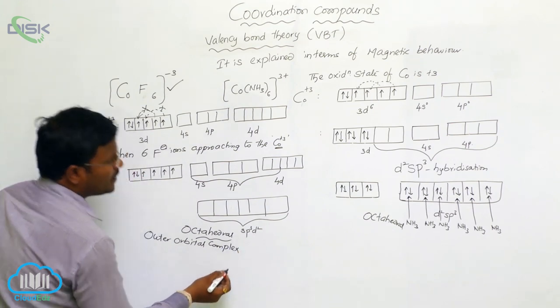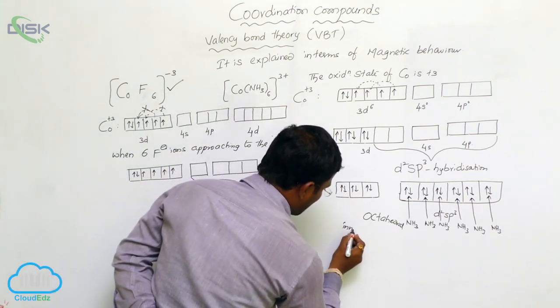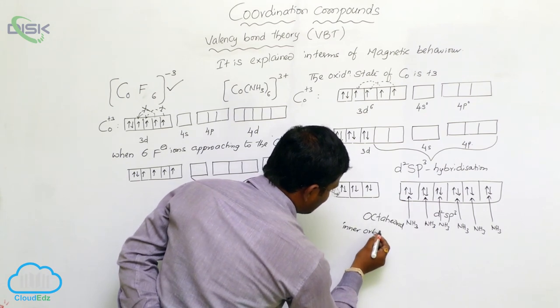Whereas, the resulting, this compound is called as inner orbital complex. Why is inner orbital complex?